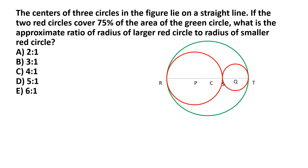Since centers P, C, and Q are given to lie on a straight line, all the touch points are part of that same straight line, including the touch point S between the larger red circle and the smaller red circle. That's pretty straightforward.